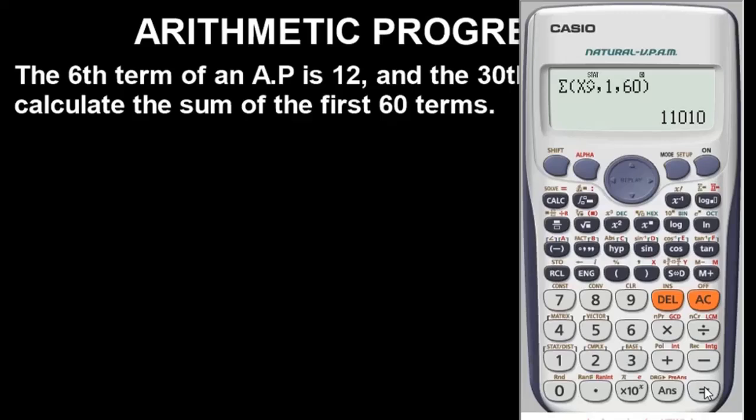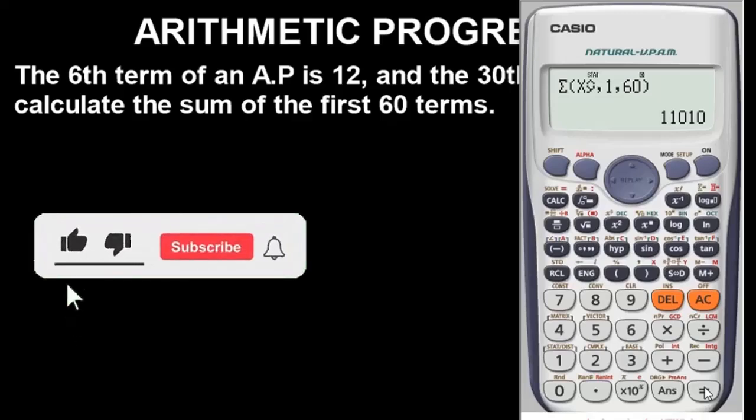So the sum of the first 60 terms is 11,960. This is basically how you can solve problems using the Casio calculator for sum of arithmetic progression.